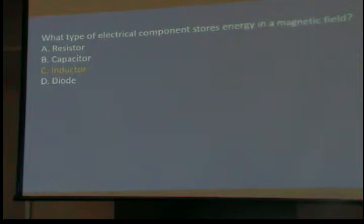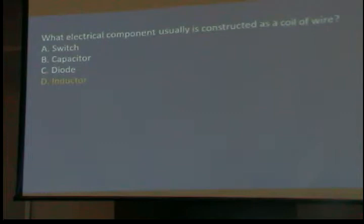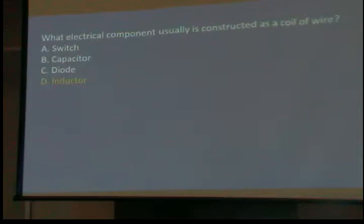What type of electrical component stores energy in a magnetic field? An inductor. One electrical component usually constructed as a coil of wire — an inductor is nothing more than a coil. It could be three turns of wire, it could be 3,000. It could be on an air core or a ferrite core, but it's still a coil.